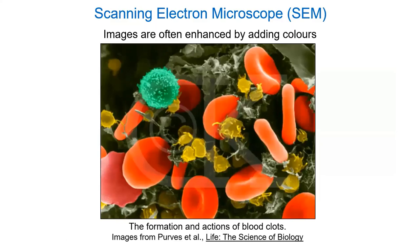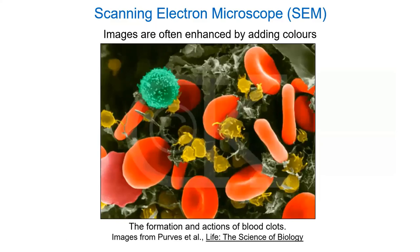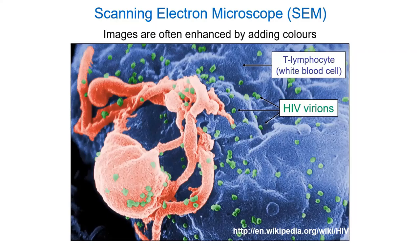Lots of nice pictures — it's hard not to include too many because they're very nice to look at. Here's another one where the color really helps to see it — under grayscale it's a lot harder to see the viral particles. This is HIV budding off of an infected cell.